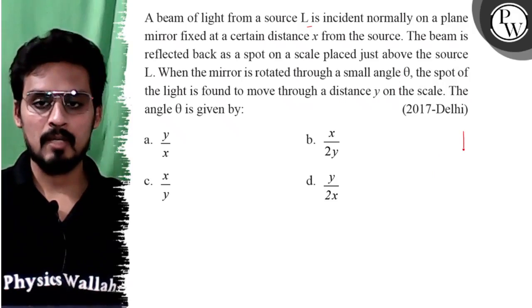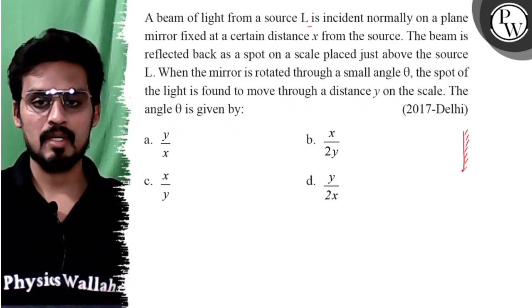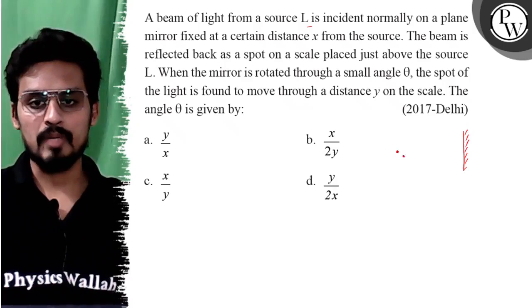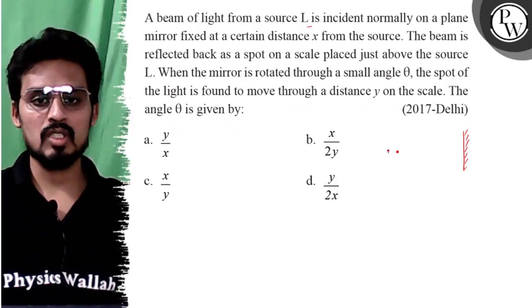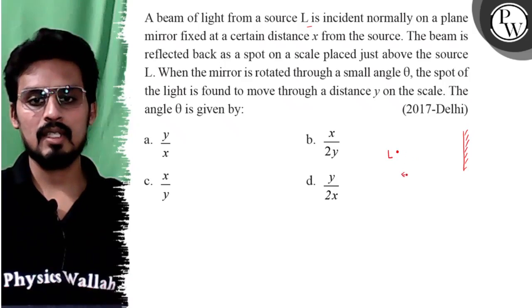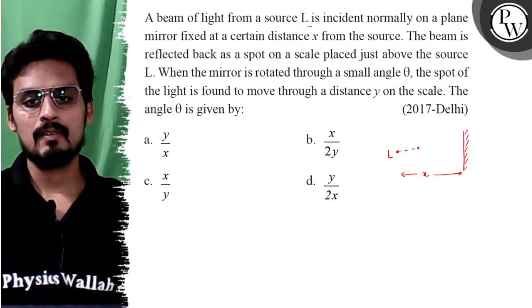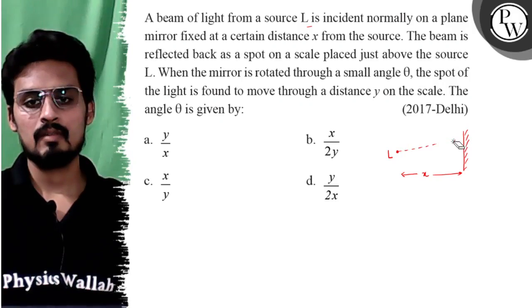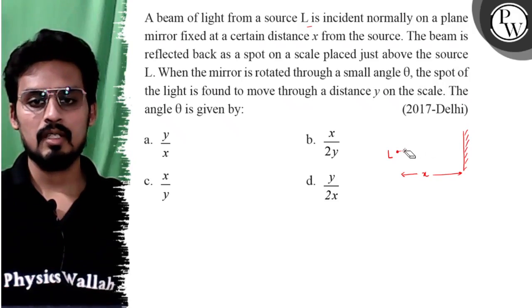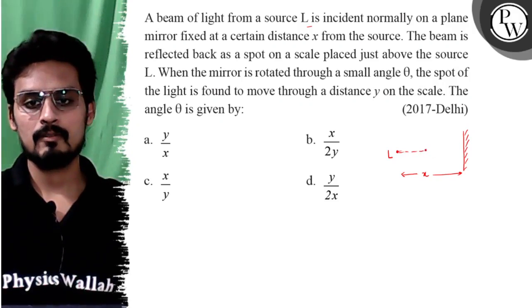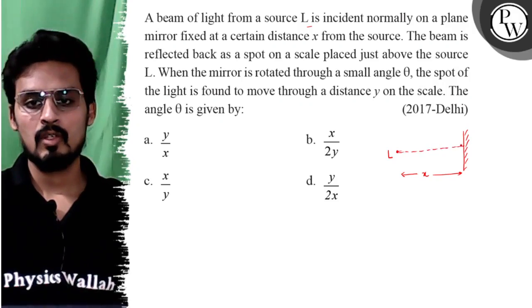We can see that the mirror is here, and at some distance we have a source which is L. Here is the distance we have. A light ray goes on to the mirror at this distance and reflects here.